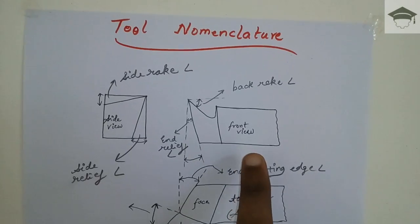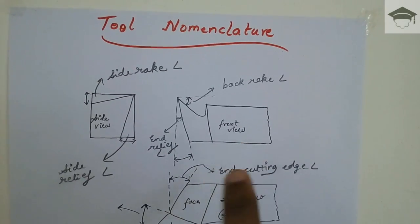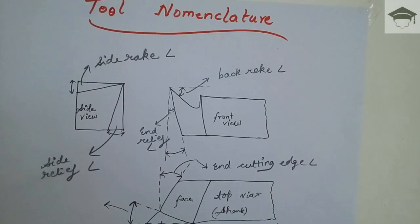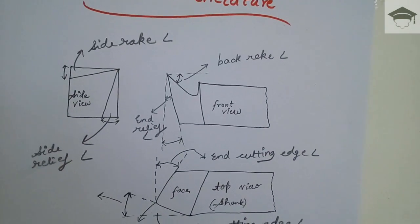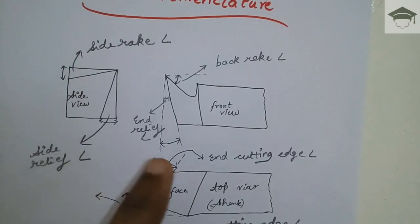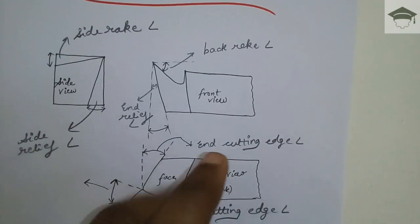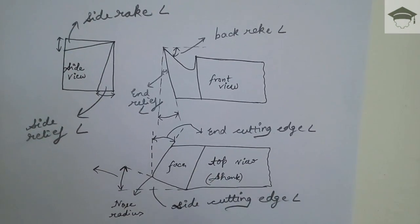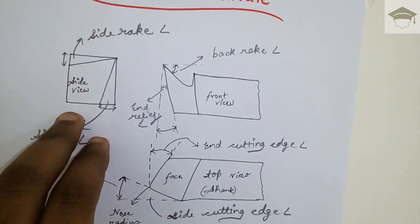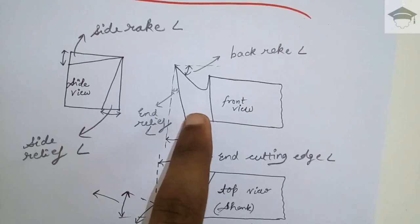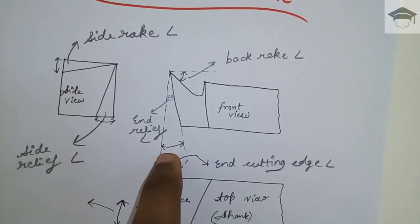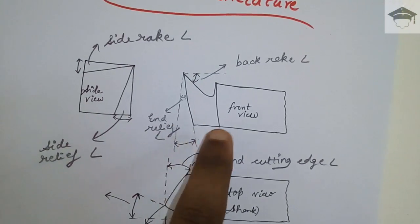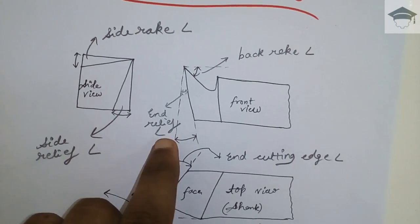This is the front view of the single point cutting tool, this is the side view, and this is the top view. This is the first angle projection, in which the front view comes at the top, the top view comes at the bottom, and the side view comes here. This angle is known as the end relief angle, which is provided in order to prevent the tool from rubbing against the finished surface.